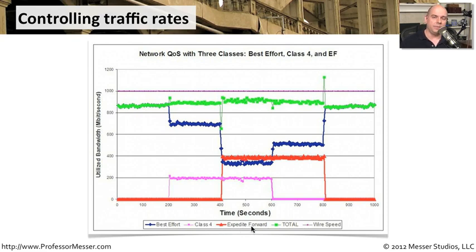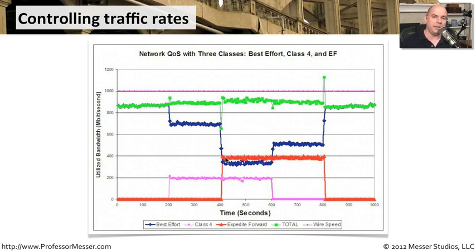The third type is expedite forward — high priority traffic that should always get through, with all other traffic set to lower priority. In the graph, as class four traffic begins, best effort traffic decreases to free up bandwidth. When expedite forward traffic starts — say, someone picks up a phone and makes a voice over IP call — best effort traffic drops significantly. Only after class four traffic disappears does best effort move up a little, but it still won't use all available bandwidth while the VoIP call is ongoing. Once the call ends, best effort traffic moves back to the top.